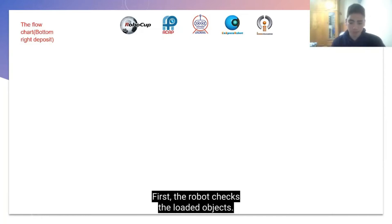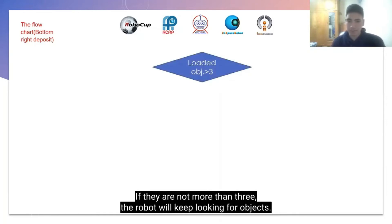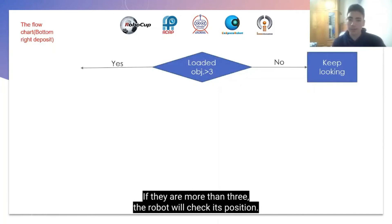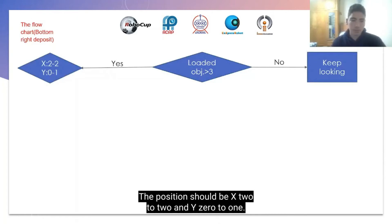First, the robot checks the loaded objects. They should be more than 3. If they are not more than 3, the robot will keep looking for objects. If they are more than 3, the robot will check its position. The position should be x2 to 2 and y0 to 1.